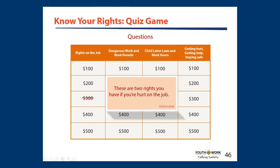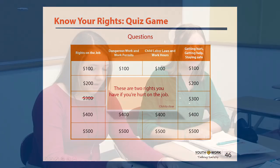We'll take Rights on the Job for $300, please. These are two rights you have if you're hurt on the job. The right to health care and lost wages. Correct. Go again.